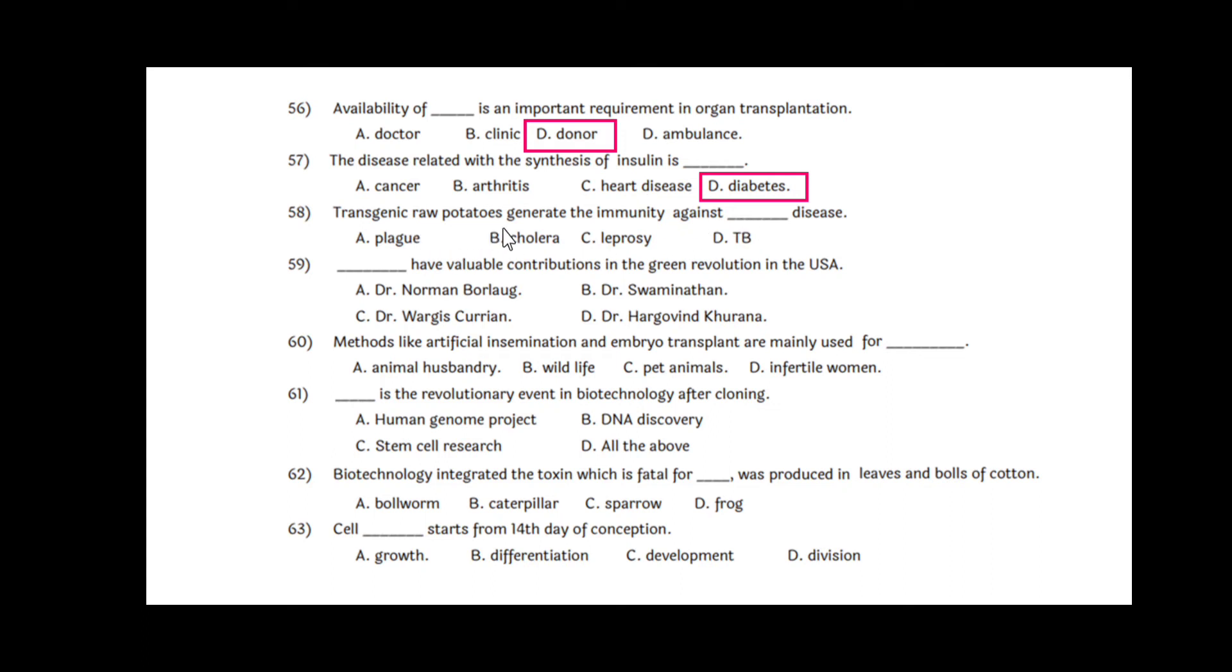Question 58: Transgenic potatoes generate the immunity against dash disease, and that disease is cholera, option B. Question 59: Dash has valuable contributions in the green revolution in the USA, and that is Dr. Norman Borlaug, option A. Question 60: Methods like artificial insemination and embryo transplant are mainly used for animal husbandry, option A. Question 61: Dash is the revolutionary event in biotechnology after cloning, and that is stem cell research, option C.